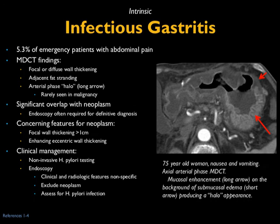This patient would end up getting endoscopy in clinical practice. This was a case of gastric wall thickening due to infectious gastritis. Key findings: focal or diffuse wall thickening — in this case diffuse — with some adjacent fat stranding, which is not uncommon. You don't need a perforation to see gastric stranding, and sometimes on arterial phase imaging you'll see a halo appearance, though that's fairly uncommon.